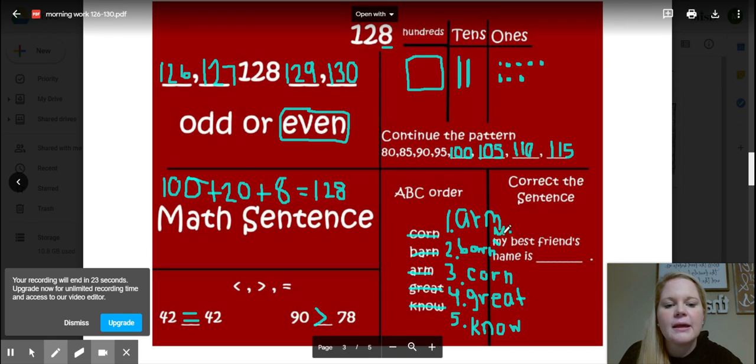So capital M at the beginning, and then you've got to put whoever your best friend is in the blank. So my best friend's name is Brittany: B-R-I-T-T-A-N-Y. Have a great day, guys! Don't forget that period.